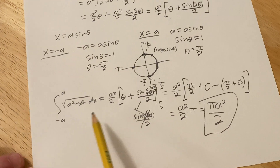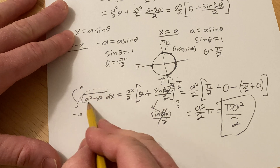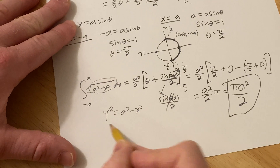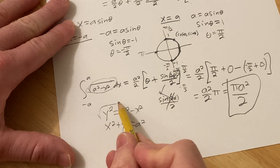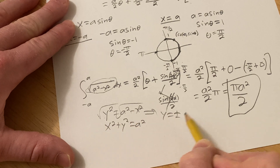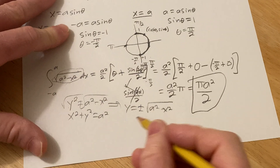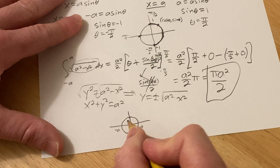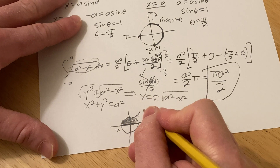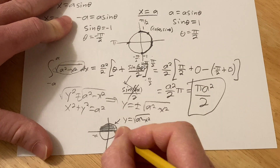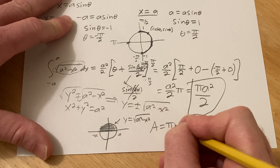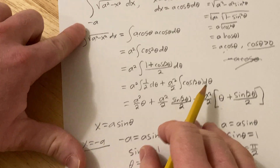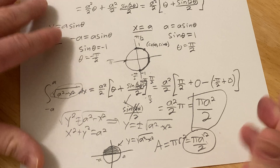So what does this mean geometrically? The expression under the square root, a squared minus x squared, comes from x squared plus y squared equals a squared — that's a circle. Taking the square root gives y equals the square root of a squared minus x squared, which is the top half of a circle centered at the origin with radius a. Integrating from negative a to a gives the area under that curve — the area of a semicircle. The area of a full circle is pi r squared, so for radius a that's pi a squared, and half of that is pi a squared over 2. We could have just used the circle area formula from the start.